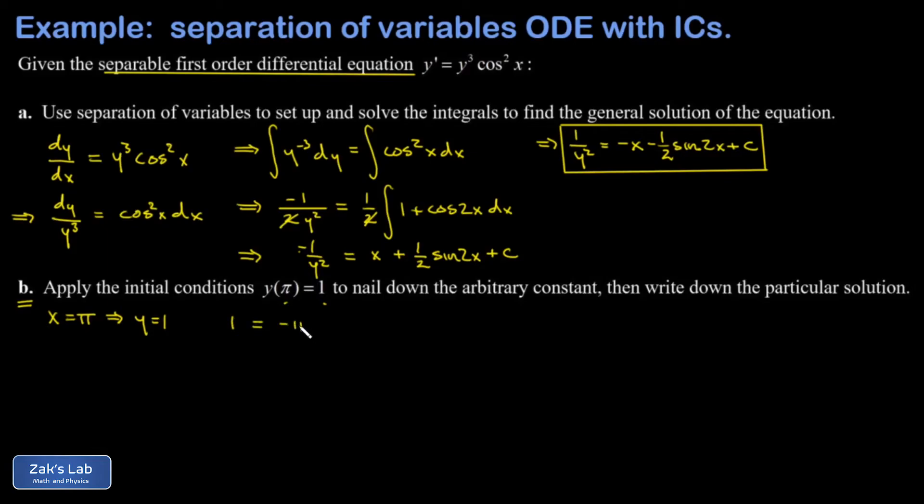I get that that's equal to -π - (1/2)sin(2π), well that vanishes, plus C. So I solve for C and I get that C is just equal to π + 1.